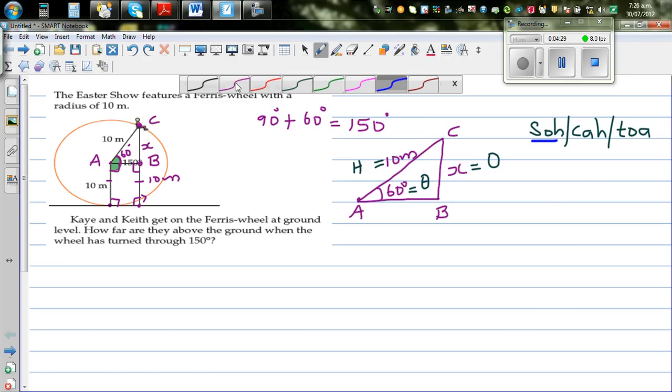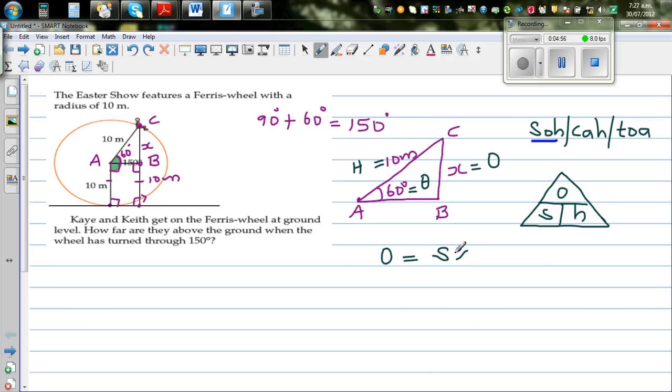So I'll draw the SOH CAH TOA triangle. Again, this is a good habit to draw the triangle, the formula, so that you can decide whether you have to divide or multiply. And you write sine always like this: S, O, H like this. Okay, and then you have to find O. So let me write O is equal to... S and H are sitting underneath, so you have to multiply. So that is S times H.